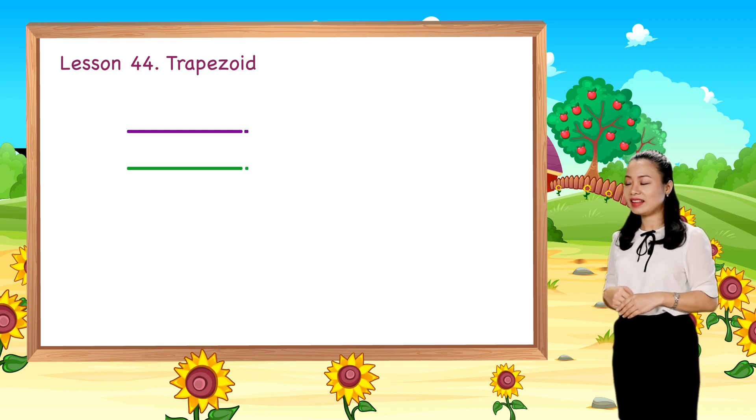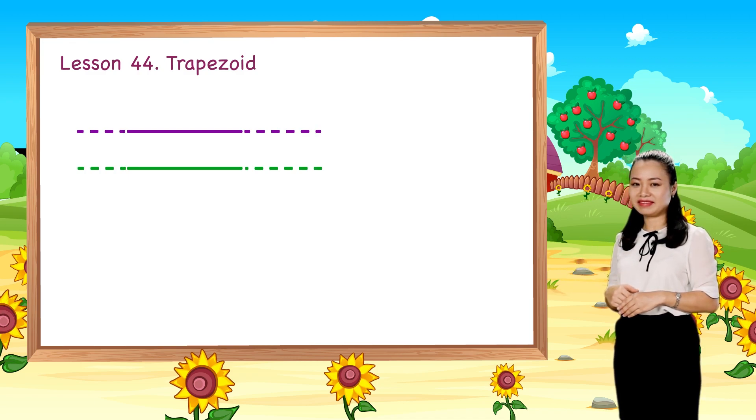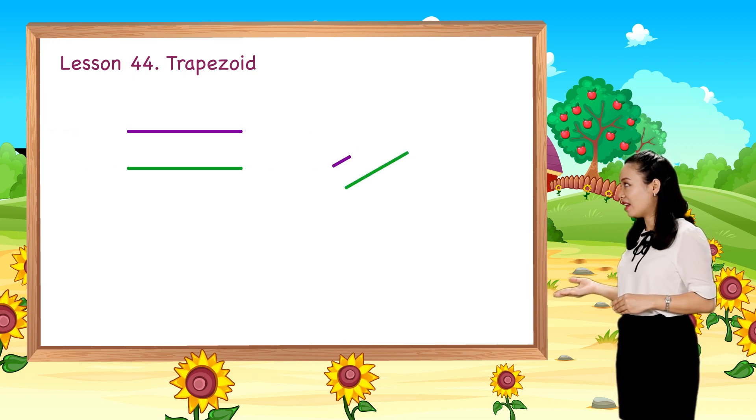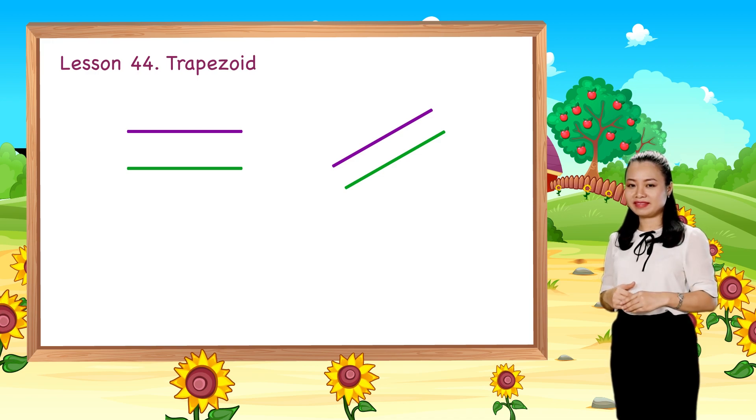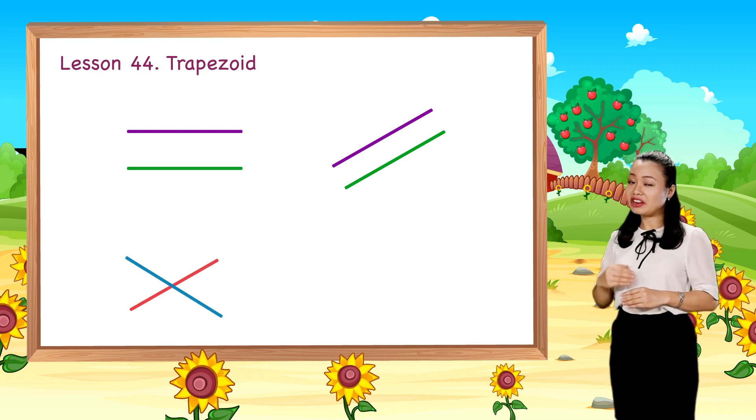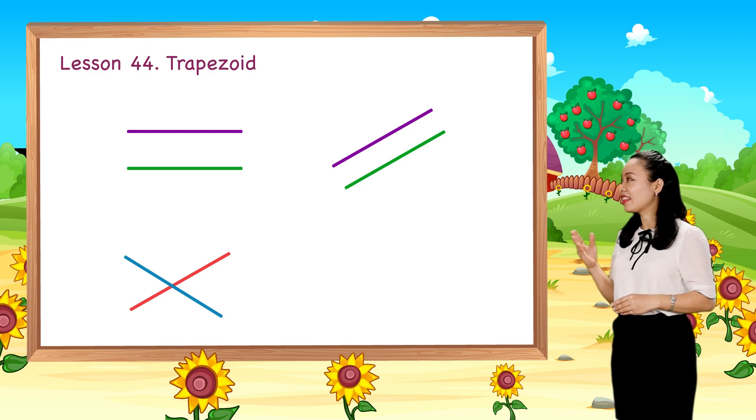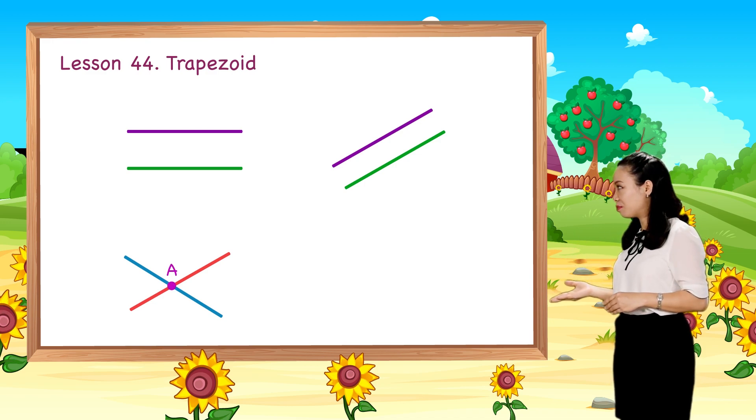they never meet each other no matter how long they are. These lines are parallel too because they never meet each other no matter how long they are. These lines are not parallel because they cross each other at this point.